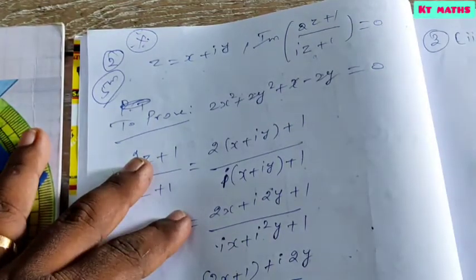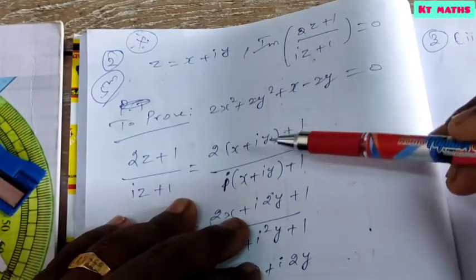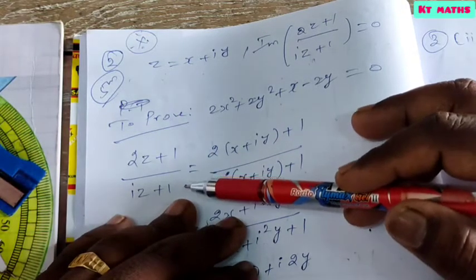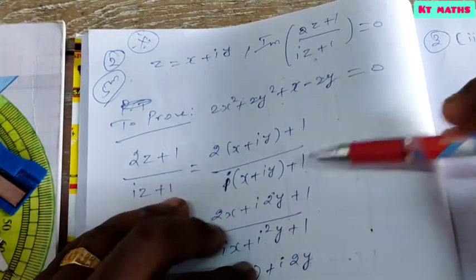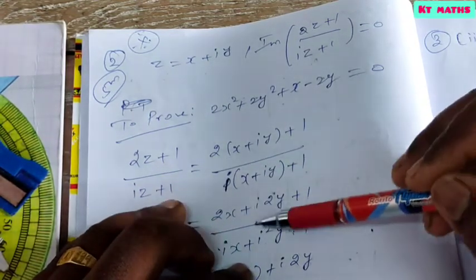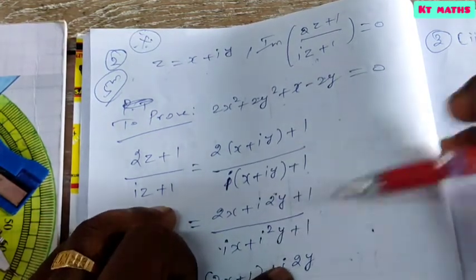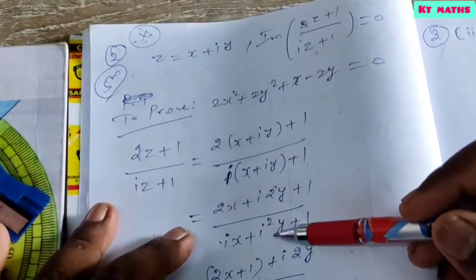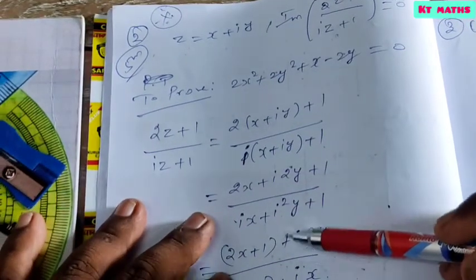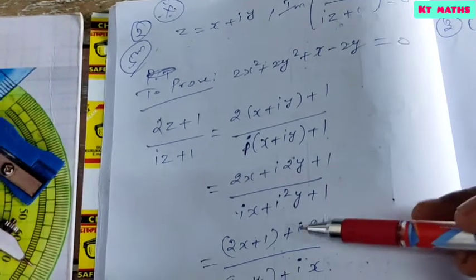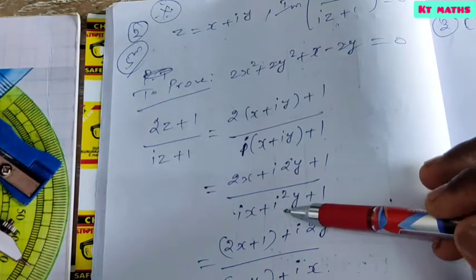Substituting z equals x plus iy: we get 2(x plus iy) plus 1 in the numerator and i(x plus iy) plus 1 in the denominator. Expanding: numerator is (2x plus 1) plus i(2y), and denominator is ix plus i squared y plus 1. Since i squared equals minus 1, denominator becomes (1 minus y) plus ix.